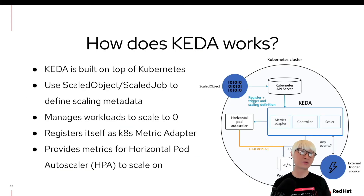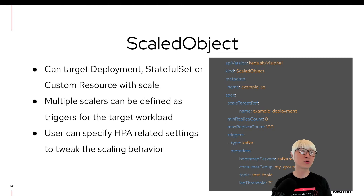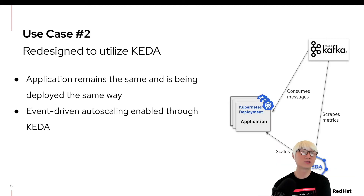KEDA is built into Kubernetes and you can define a ScaleObject or ScaleJob for batch processes. Based on that object, KEDA will scale your standard resources — scaling zero to one and one to zero — and with HPA triggering it scales to the required number of application instances. Here's a quick example of how to define a ScaleObject: you specify the scale target reference object, for example the deployment name, and then you specify a trigger which is the source you're going to pull event metrics from. For example, this is a Kafka source.